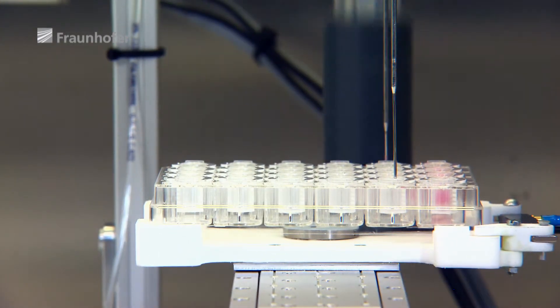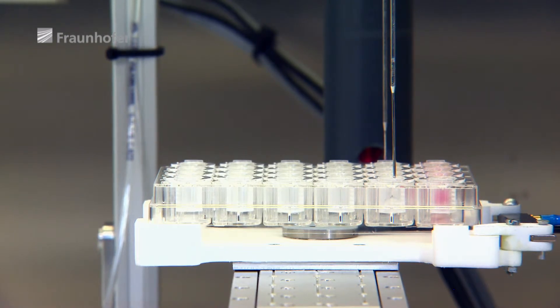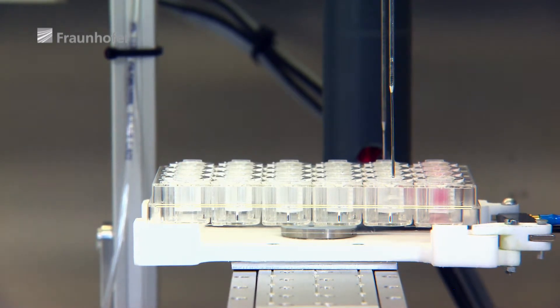In Module 3, the cultured skin cells are placed on a gel matrix. The skin tissue is able to grow here.